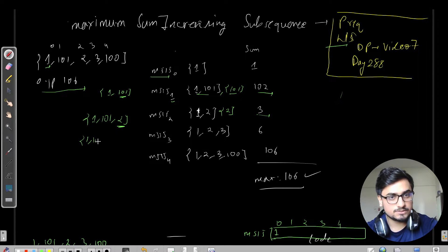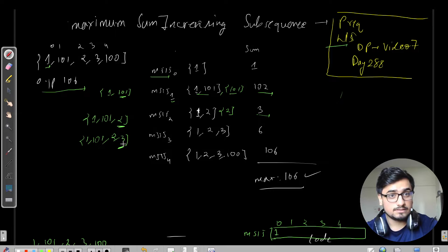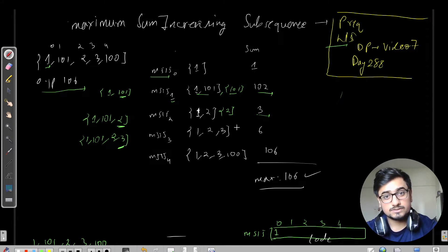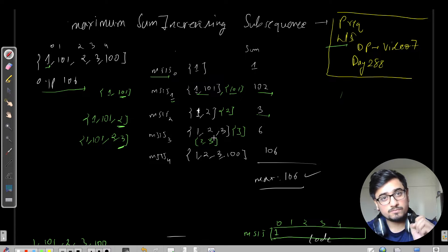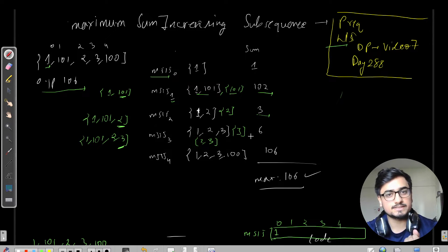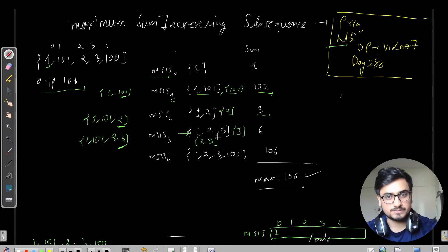For MSIS[3], we consider all elements up to index 3: 1, 101, 2, and 3. The element 3 must be present. Possible subsequences: just 3; then 1 and 3; then 1, 2, 3. We ensure 3 is in each subsequence and the order is increasing. The maximum sum among all possibilities is 6, coming from the subsequence 1, 2, 3. So MSIS[3] = 6.